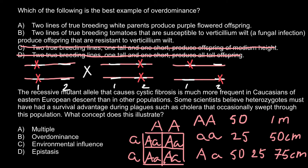So this would not be an example of overdominance, and we can cross out answer A. That leaves answer B: two lines of true breeding tomatoes that are susceptible to Verticillium wilt, a fungal infection, produce offspring that are resistant to Verticillium wilt. This is our answer — it is an example of heterozygous vigor, or heterozygotes having better fitness than both homozygous parents.